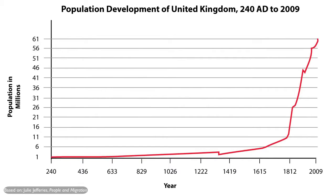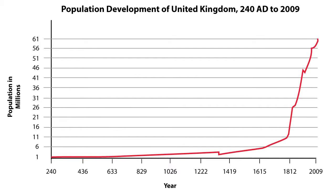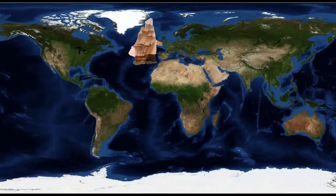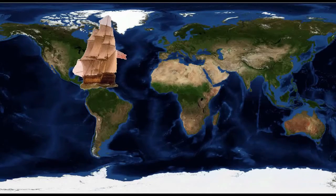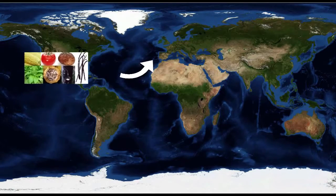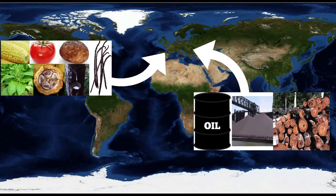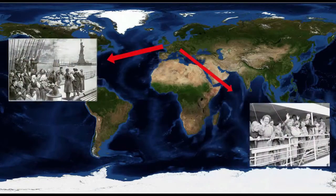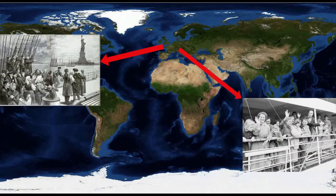From the 17th century, population growth in England and other parts of Europe accelerated due to increases in agricultural production, as well as increasing medical knowledge and technological innovation linked to the industrial revolution, but more importantly European expansion overseas. European powers were importing food and resources from other parts of the world that were in short supply at home, and exported part of the excess population to the colonies.